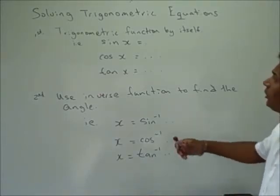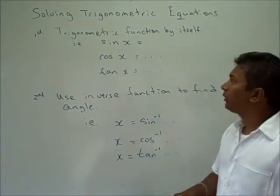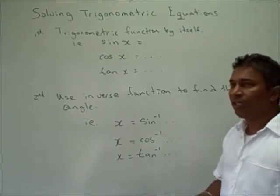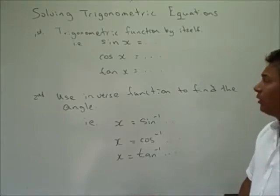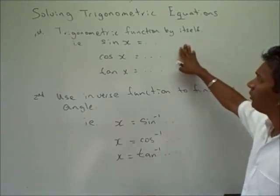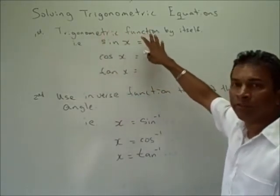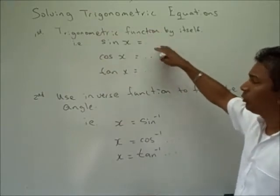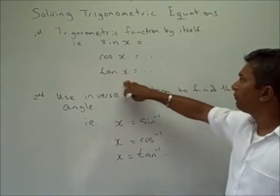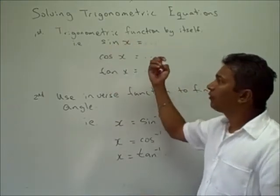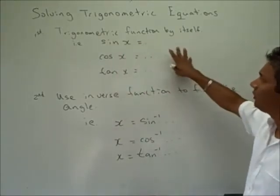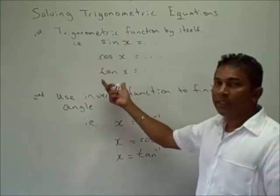For this section of the course, we'll be solving trigonometric equations. As in all equations, we're trying to find the value for the variable that makes our equation true. For our trigonometric functions, the first thing we probably want to do is to get that trigonometric function by itself — sine x, cosine x, tan x, cosecant x, secant, or cotangent. So our first step is to always try and get that trig function by itself.